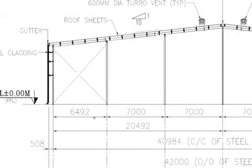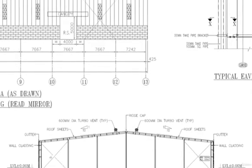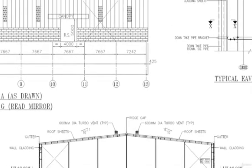The gable end slope is kept at 1:10, so the height difference between the bottom and top over a 20,000mm span is 20,000 divided by 10, which is approximately 2 meters.